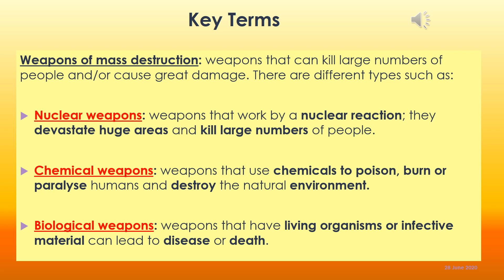Chemical and biological weapons were both outlawed around the world in 1925, shortly after World War One. But there has still been research and development of those weapons by certain countries, including the UK, and they have also been used by terrorists even in recent years.